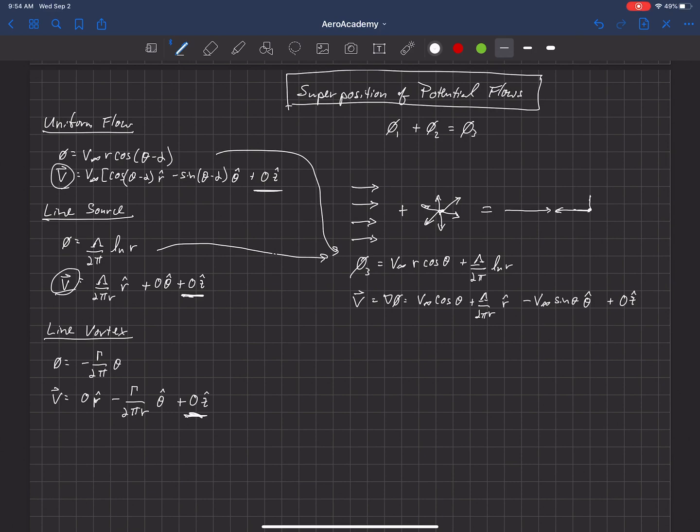So that source is going to have flow emanating out from it. And let's just draw this line here and our V infinity coming in. There's going to be some point there, some r distance, where the velocity coming out from that point source. And remember, that velocity drops off as 1 over r.